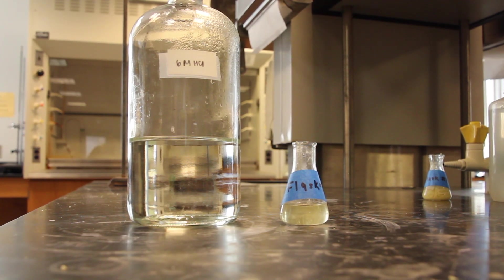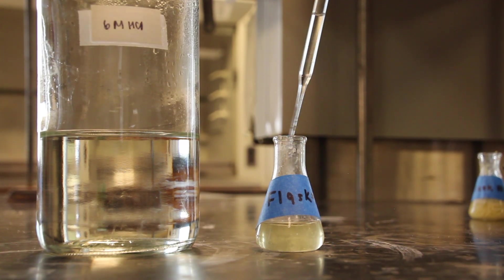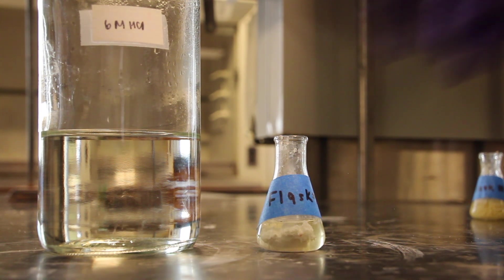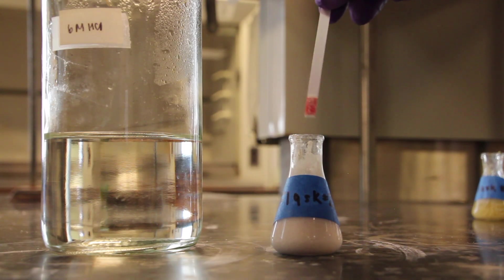Similarly, calculate the volume of 6 molar hydrochloric acid necessary to neutralize all of the sodium hydroxide used. Add this volume of 6 molar HCl to flask 2. Check the pH of the solution and continue adding HCl until the contents of the flask are acidic.